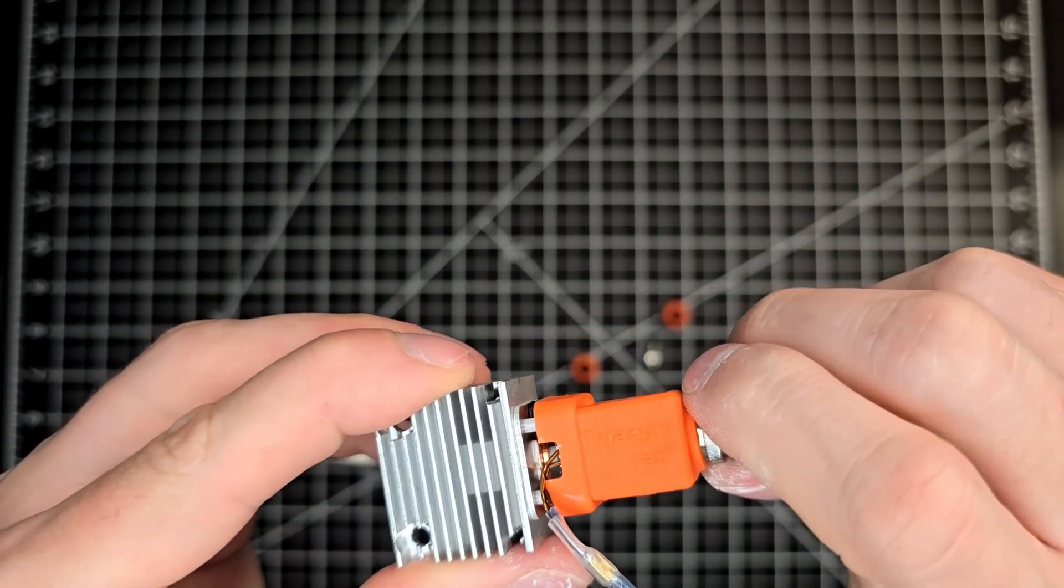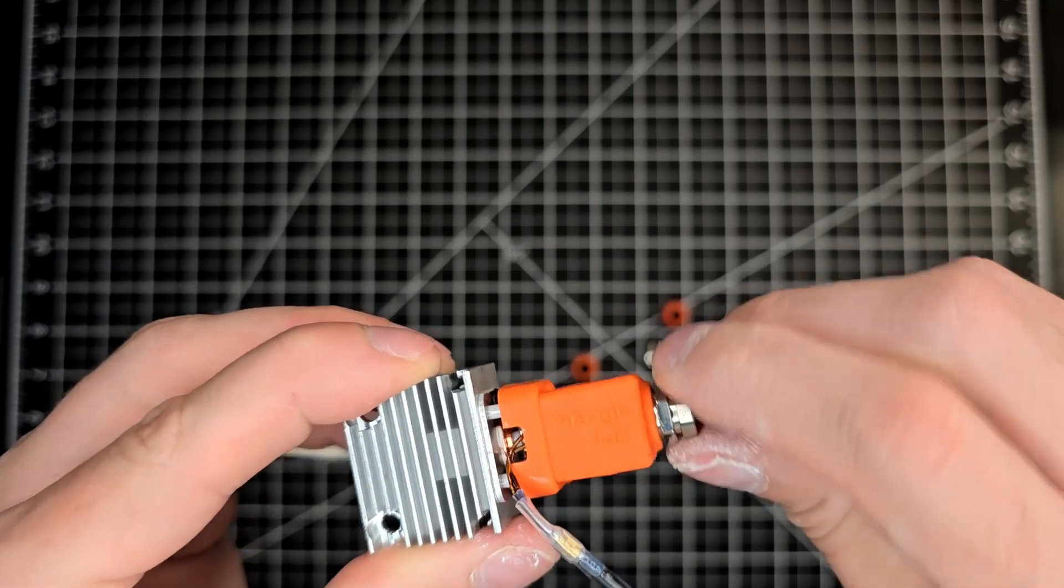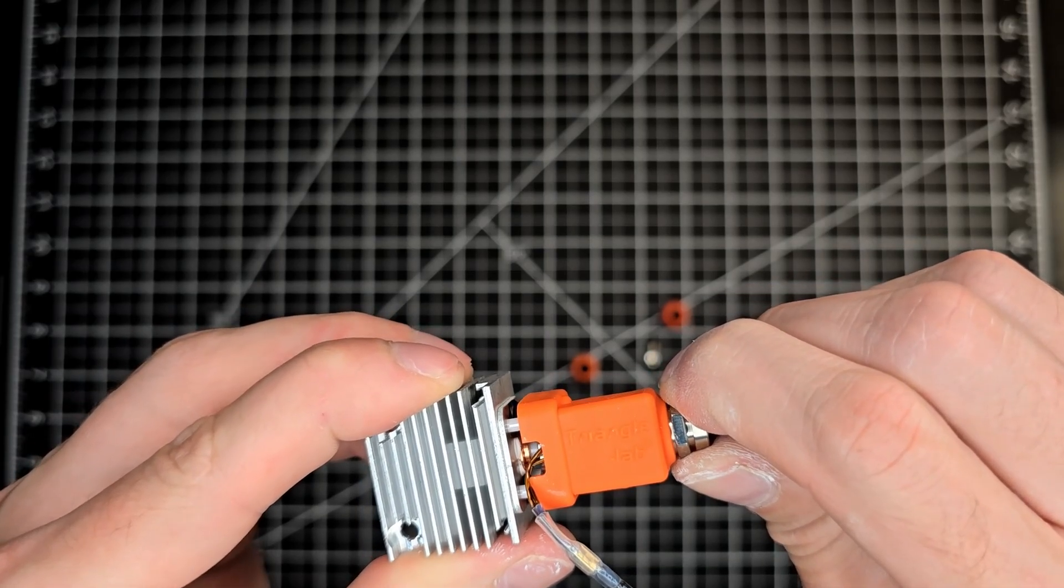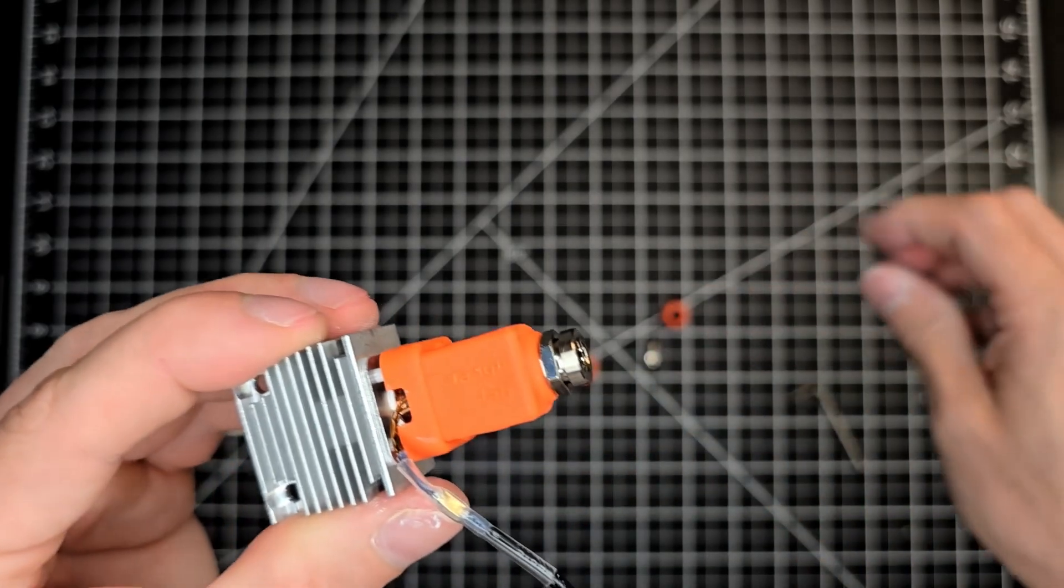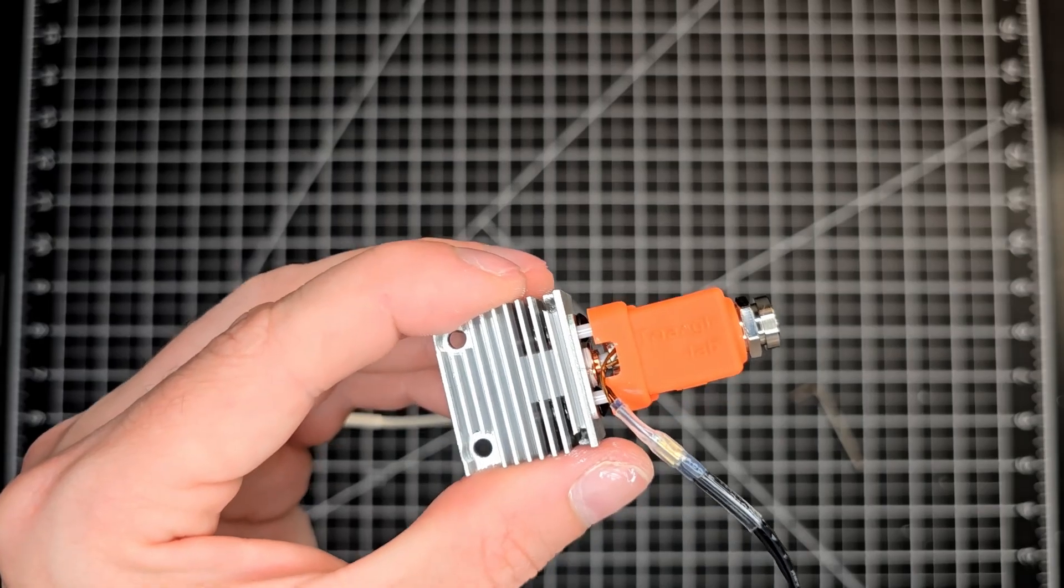With the adapter and MZE installed, make sure that the collar on the heat brake is sitting flush against the heat sink. If it isn't, adjust as is necessary.